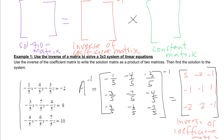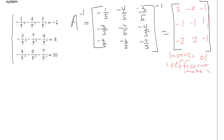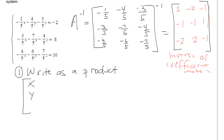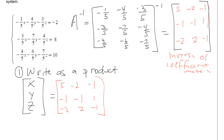In Step 1, we're going to write it as a product. We write the solution matrix — which is x, y, and z — equal to the inverse of the coefficient matrix we found above: 5, negative 2, negative 1, negative 1, negative 1, 1, negative 2, 2, and negative 1. We multiply this by the constant matrix. Our constants are negative 2, 8, and 10. That's the first thing you write down.